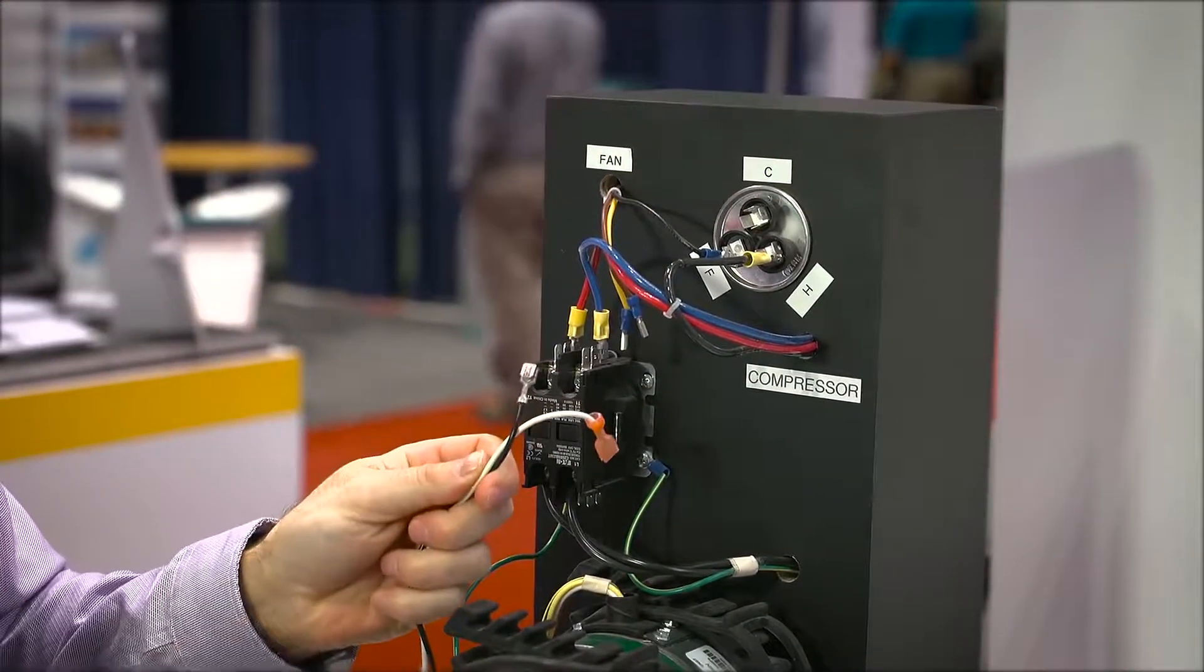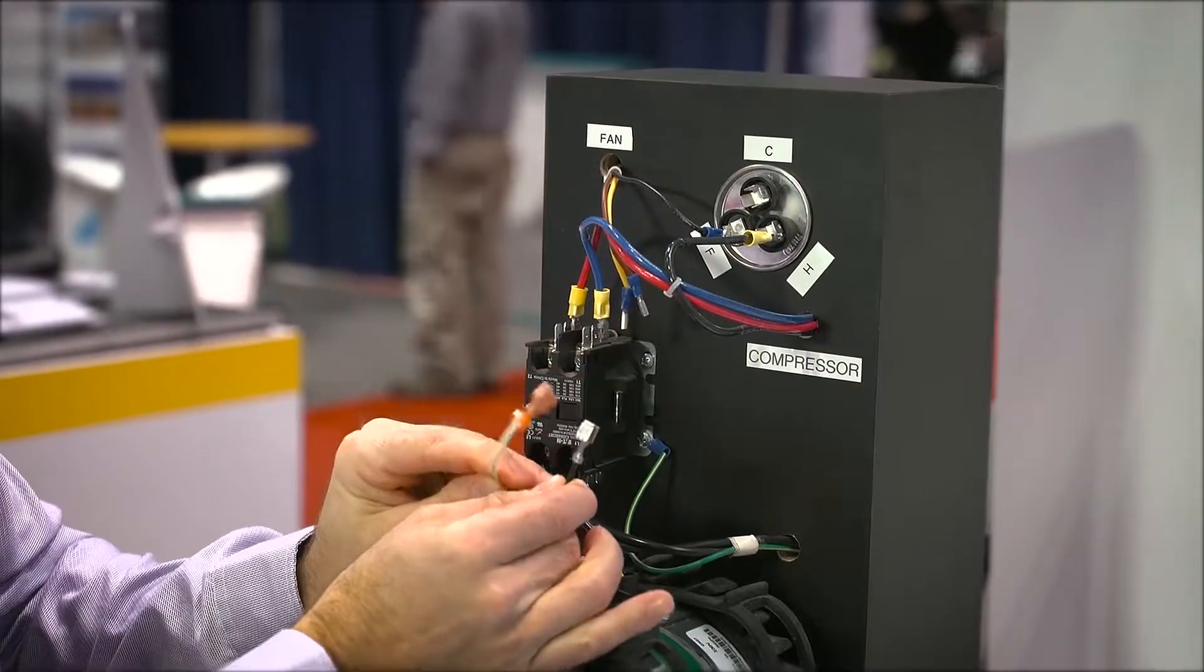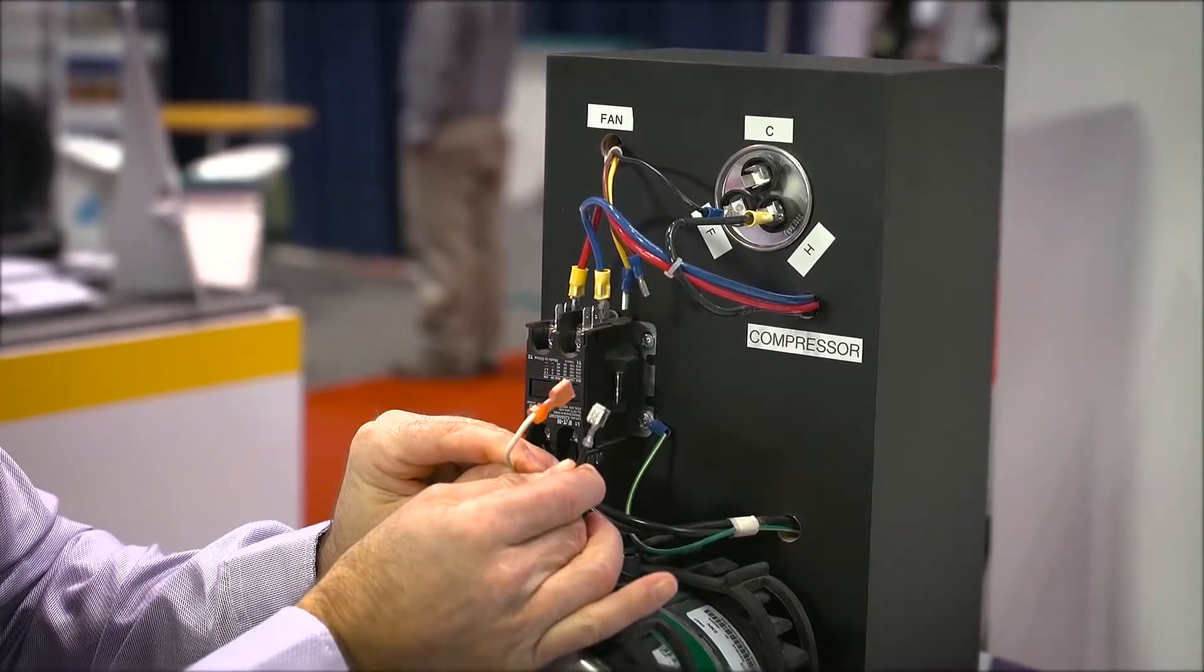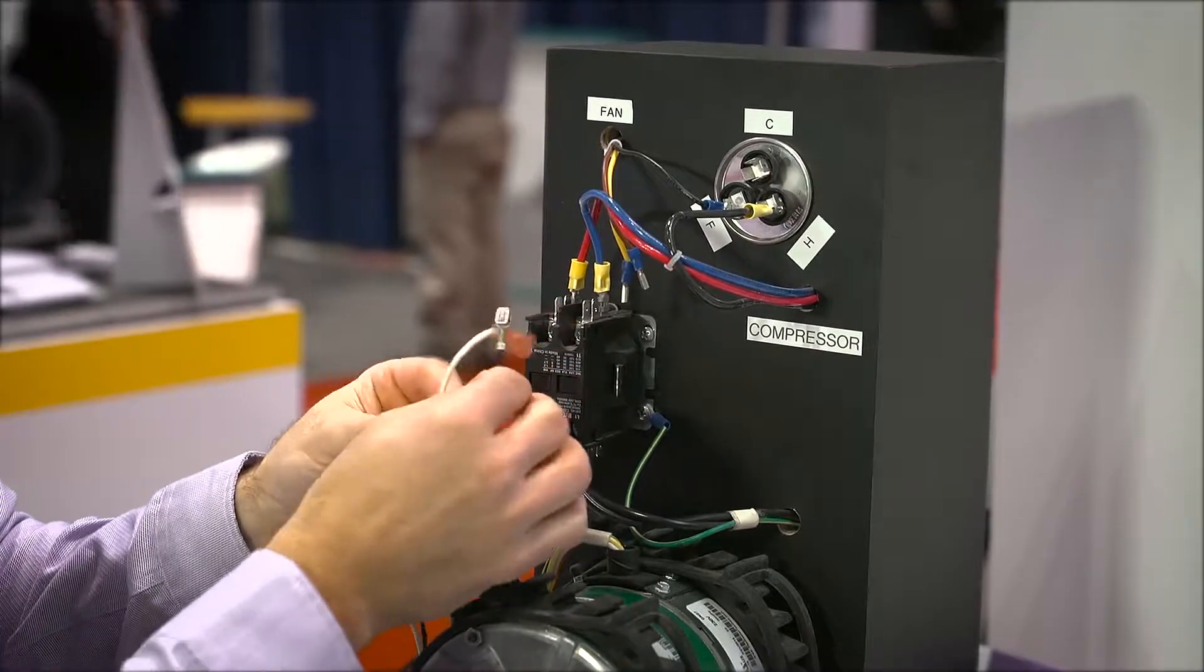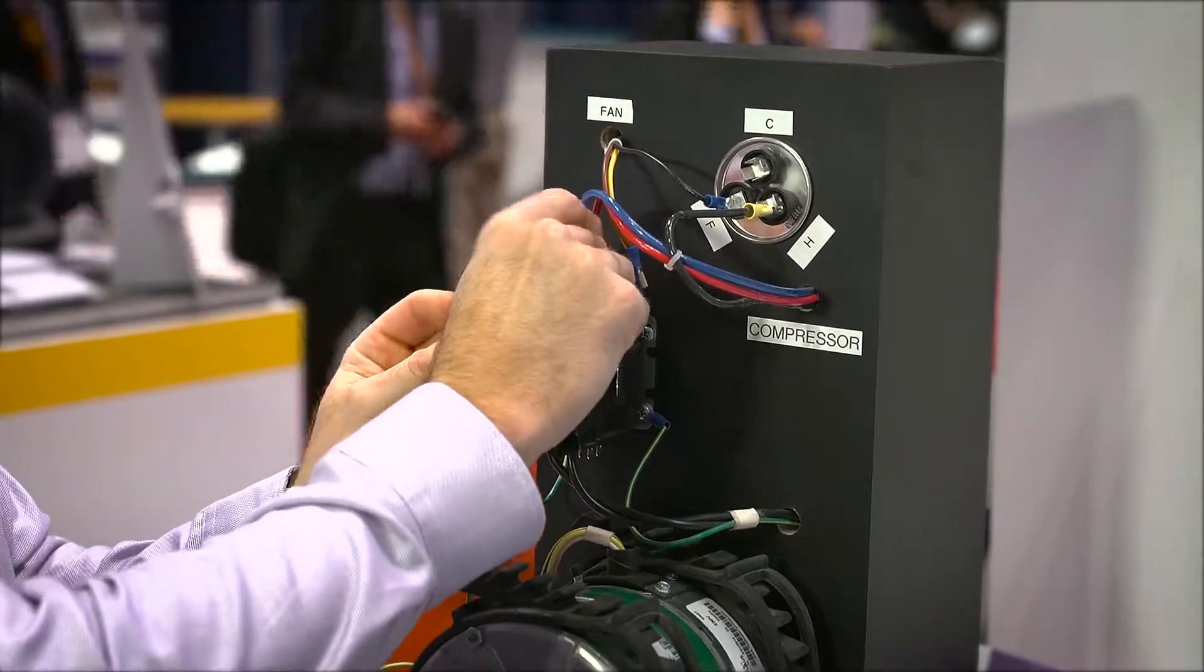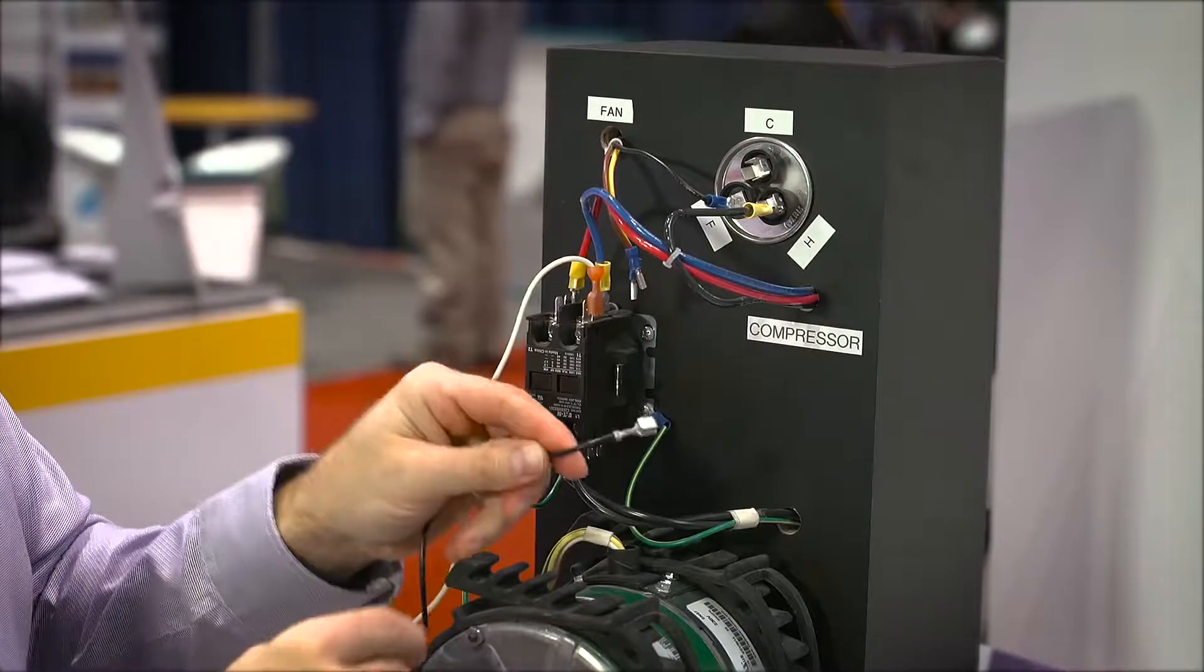Then on the Evergreen OM motor we're going to find our black and white wires. They both have the connectors already on them. They're going to go on either side of the contactor. So we can go ahead and hook up the white wire to one side of the contactor.